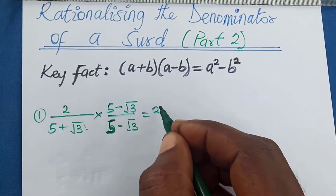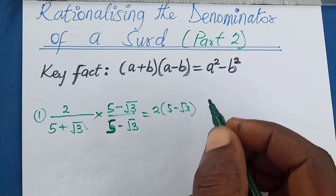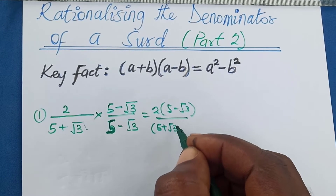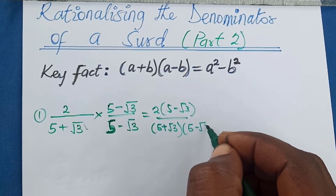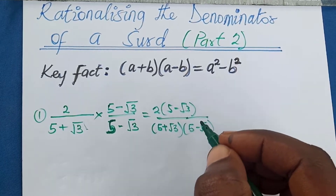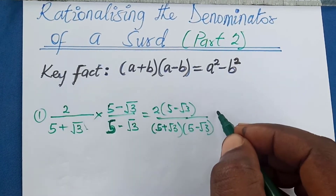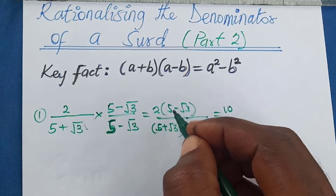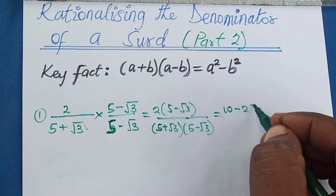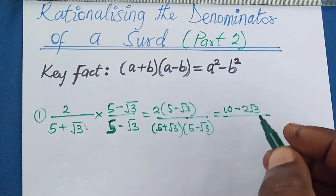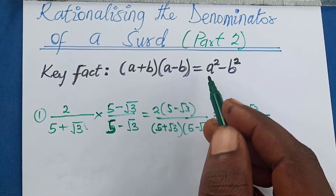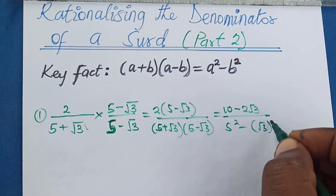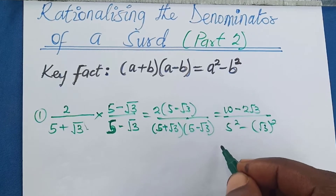So this will be equal to 2 multiplied by the numerator (5 minus 2√3) over (5 + √3)(5 minus √3). So 2 times 5 will give me 10, and then 2 times negative √3 will be minus 2√3, all over — here we make use of this identity — so we have 5 squared minus √3 squared.